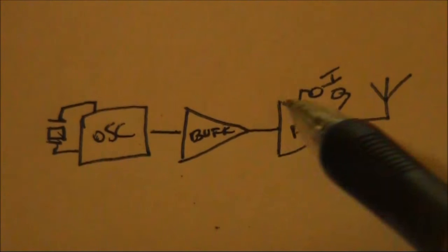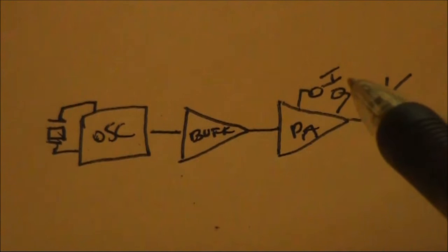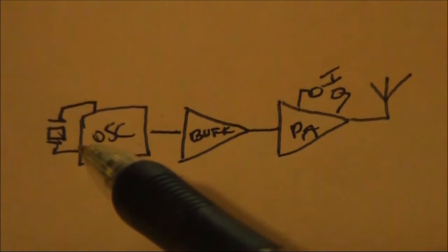In this case, a simple CW transmitter generates the signal in the crystal oscillator, then a buffer for isolation and a keyed final amplifier stage. If the signal is not present at all, the first thing you do is check if the oscillator is oscillating or not.